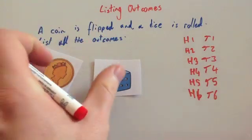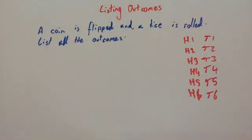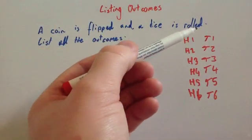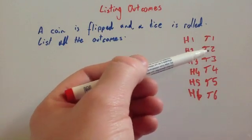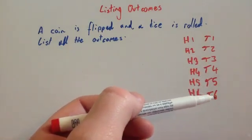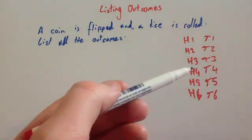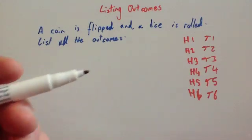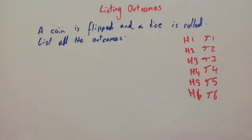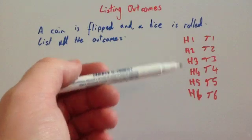So now we've listed all the possible outcomes. And we've done it in a systematic way. So we've went through logically. We started with a tail. Then tail one, tail two, tail three, tail four, tail five, tail six. And then we said we could have got a head. So we then got H1, H2, H3, H4, H5, and H6. And because we've done that, we know we have covered all the possible outcomes. So there's 12 different outcomes.